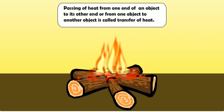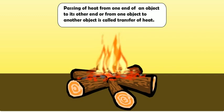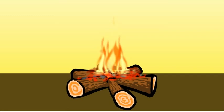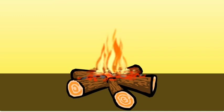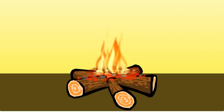Transfer of heat: The passing of heat from one end of an object to its other end, or from one object to another, is called transfer of heat. Heat flows from a hot object to a cold object — that is, from an object at higher temperature to another object at lower temperature. Heat can be transferred in three different ways: by conduction, by convection, and by radiation.